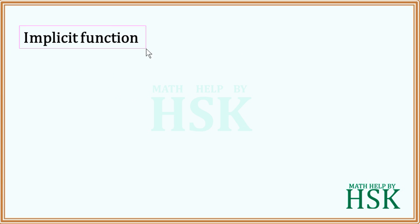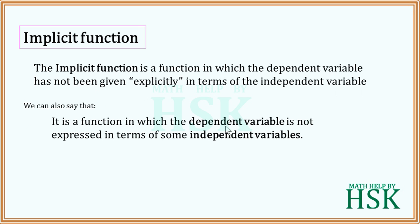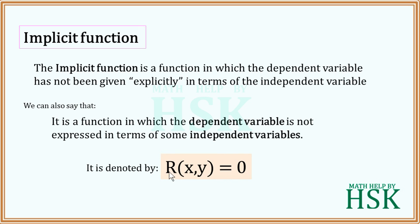Implicit functions are just the opposite of explicit functions. An implicit function is a function in which the dependent variable has not been explicitly given in terms of the independent variable. We denote it as r(x, y) = 0, where r(x, y) is a real-valued expression containing x as the independent variable and y as the dependent variable, set equal to zero.